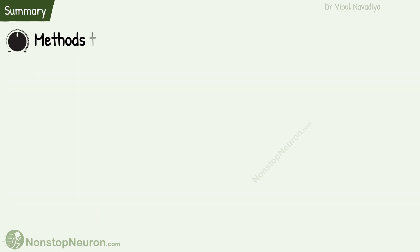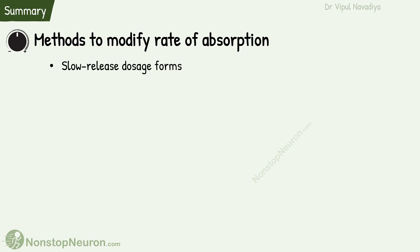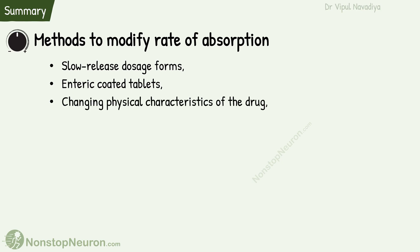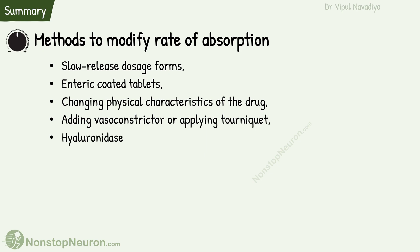Now let's have a quick summary. Slow-release preparations slow down the absorption. Enteric-coated tablets prevent the degradation of drugs by gastric acid. By changing the physical characteristics of the drug, we can control the rate of absorption. Vasoconstrictor drugs and tourniquet help decrease absorption by decreasing blood flow. Hyaluronidase increases absorption by promoting the spread of the drug. Rubbing and massage also increase absorption.